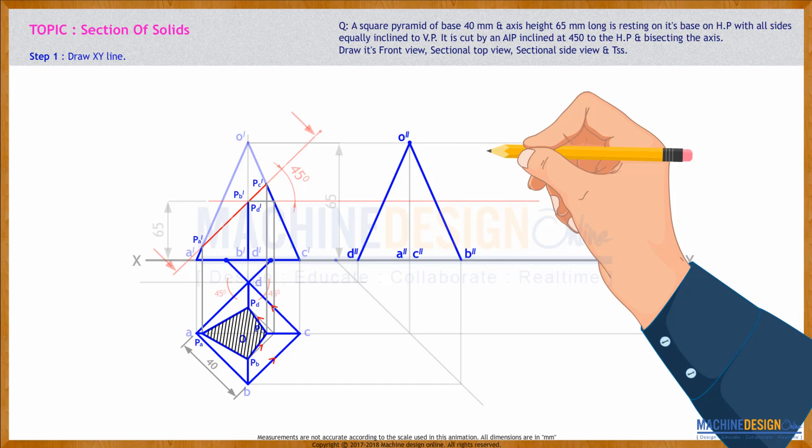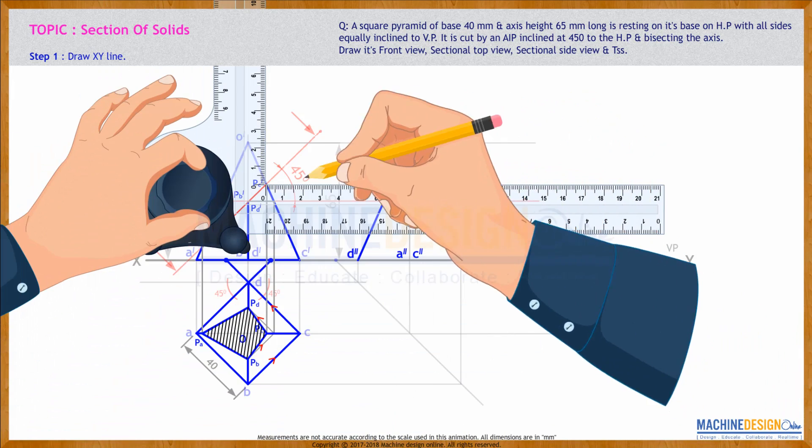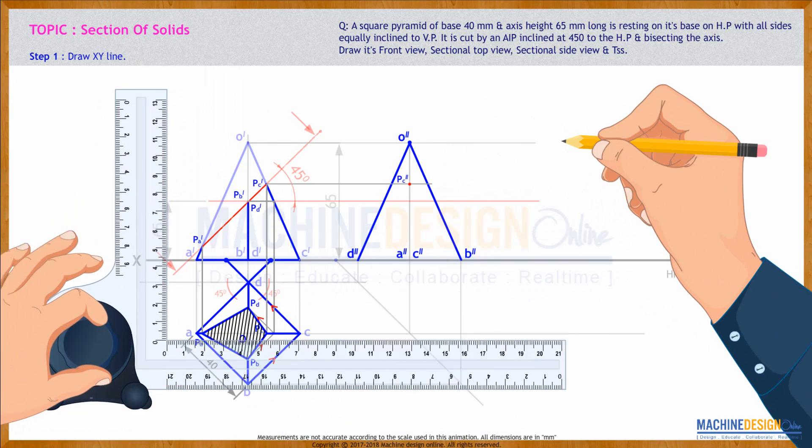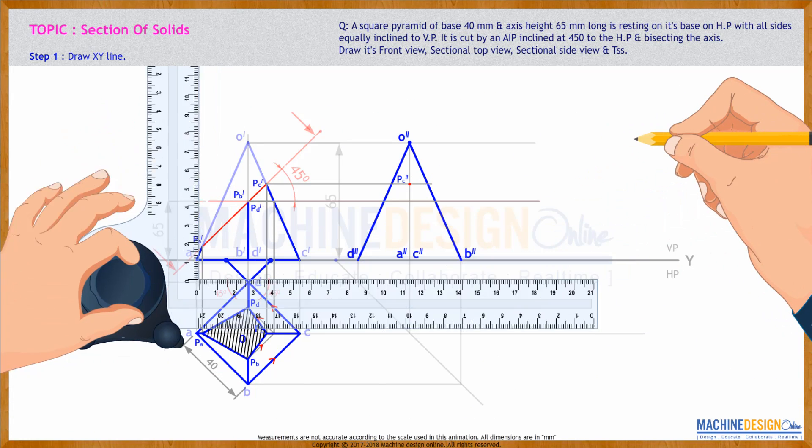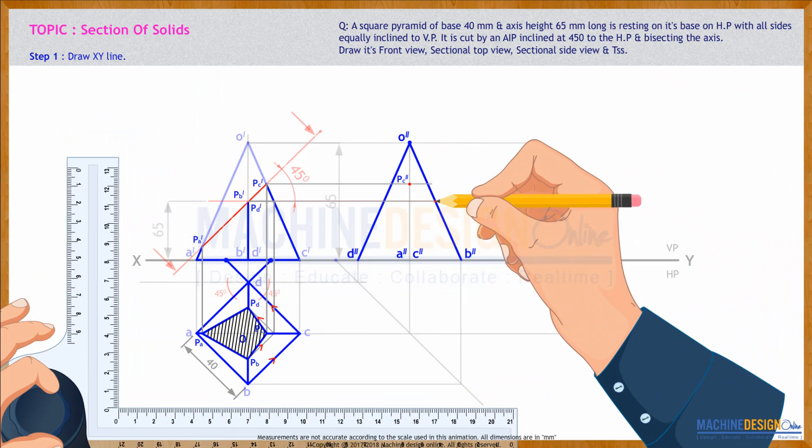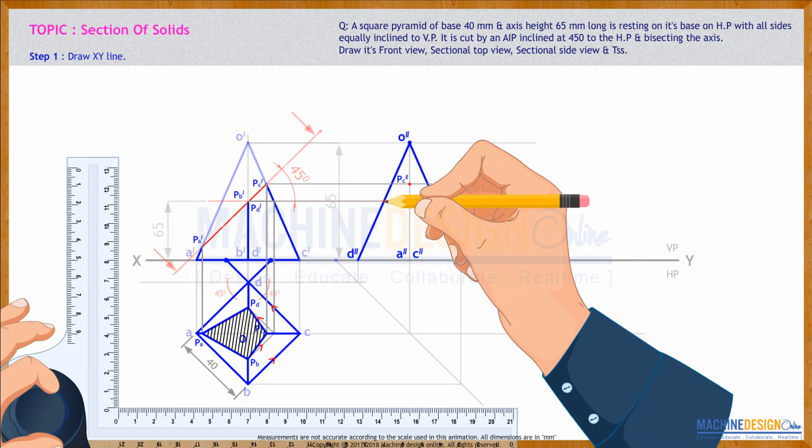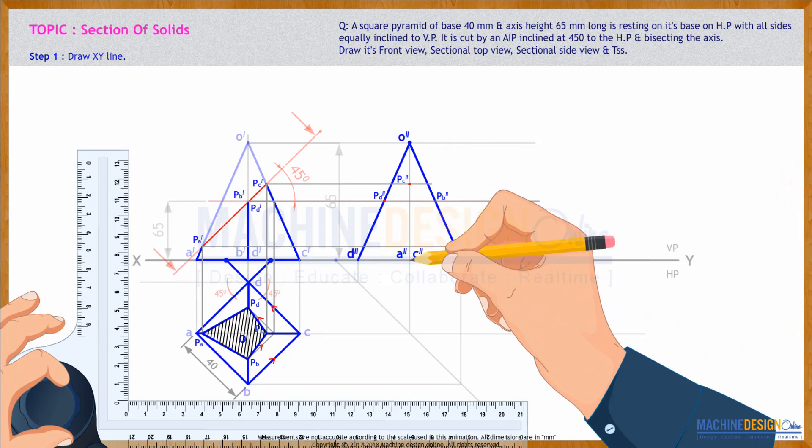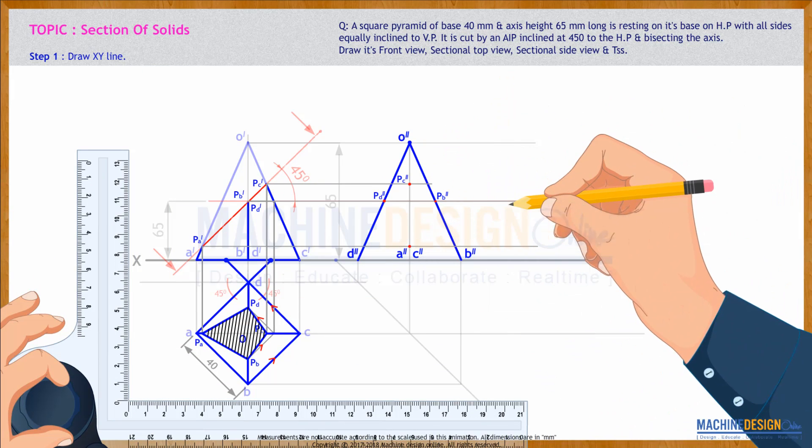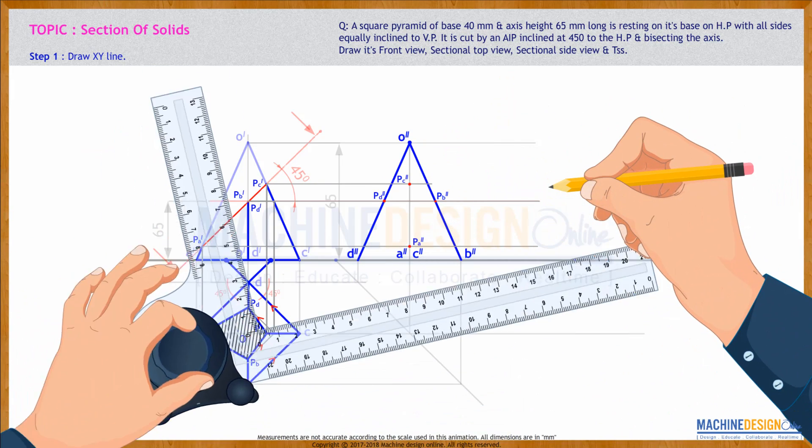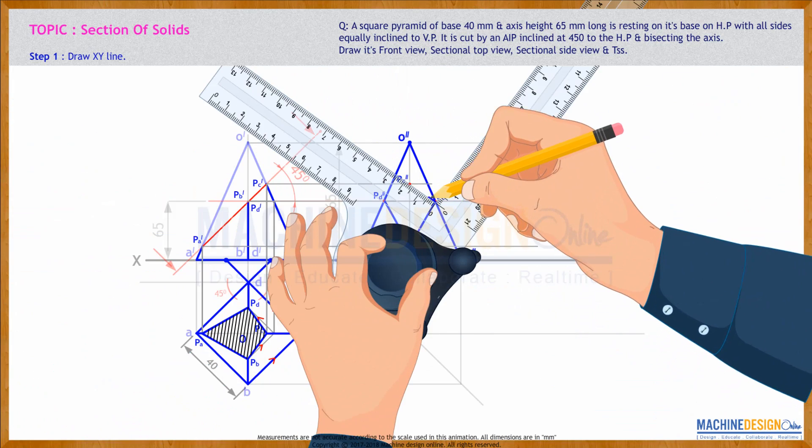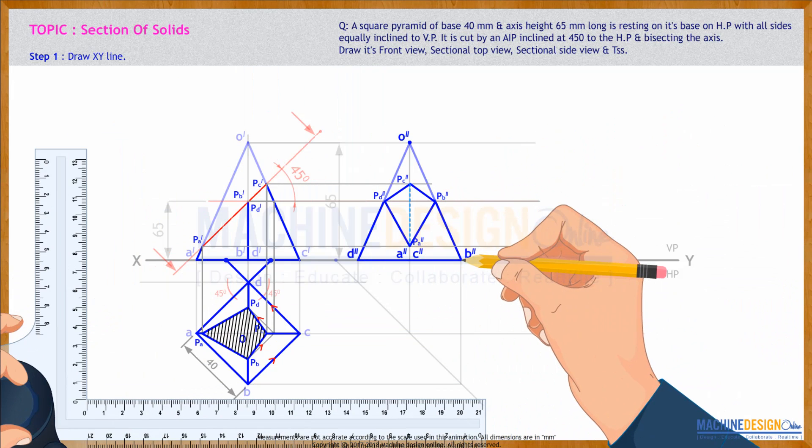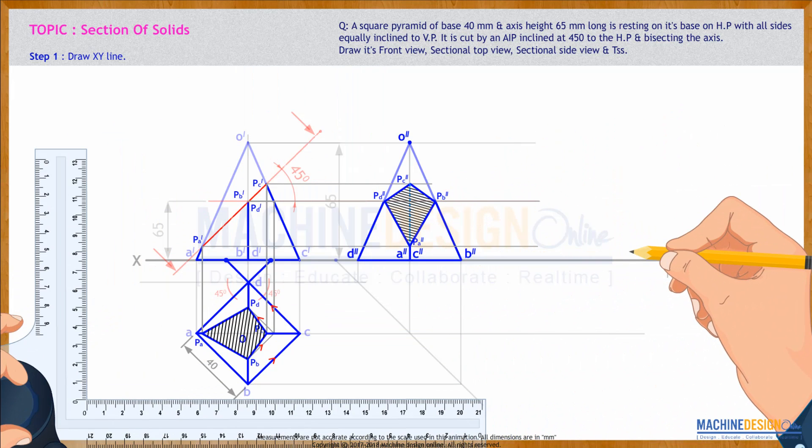Now let me see side view. So now, you project from PC dash, wherever you cut, that is PC double dash. Then you extend PB dash, PD dash. So wherever to cut O double dash B double dash, this is PB double dash, PD double dash. You extend PA dash, O double dash A double dash, wherever to cut, that is PA double dash. Then you join all these points. This line will be dotted. And this will be hatched.